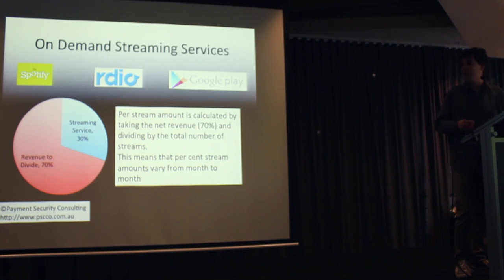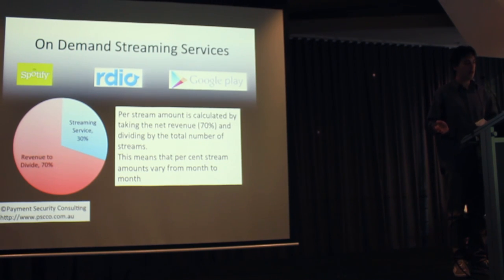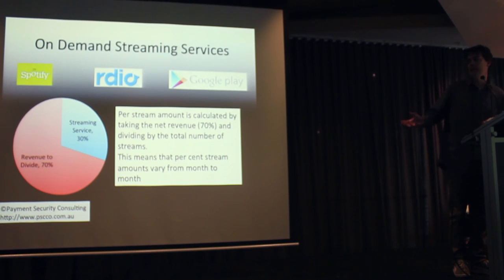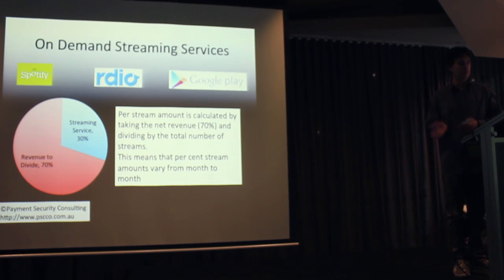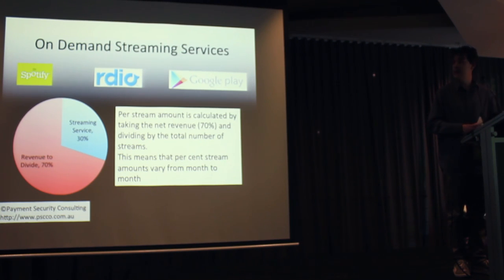Overall, they take what that 70 percent chunk of the pie is, grab how many millions of dollars that is, and over a month they take the total number of streams and divide by that revenue to come out to a per-stream rate of the royalties. However, this depends on whether you're a major label, independent, or self-released titles.